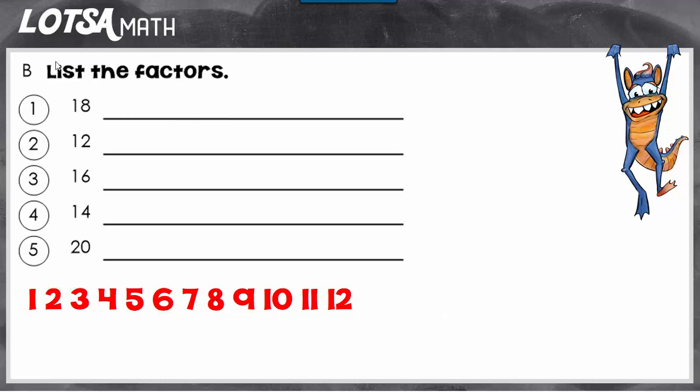So let's look at number 2, where we have to find the factors of 12. The first step of the strategy is just to write out your numbers, 1 through 12. These can be the only numbers that can be factors of 12. So we start with 1 and circle it because we know 1 will always go with the last number.